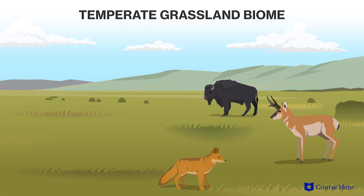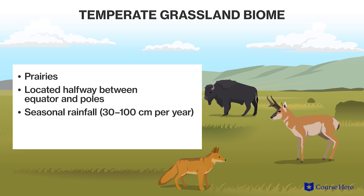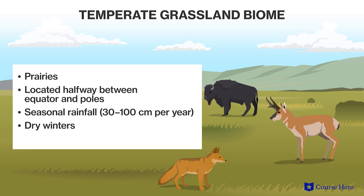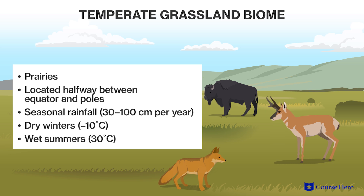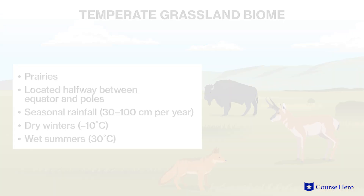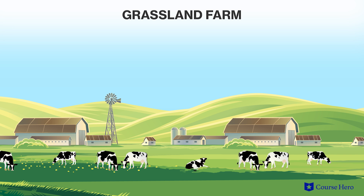Large grasslands known as prairies are generally located about halfway between the equator and the poles. Rainfall is seasonal, averaging 30 to 100 centimeters a year, with dry winters and wet summers. Similarly, winters are cold with average temperatures of negative 10 degrees Celsius, and summers are hot with 30 degrees Celsius being the average temperature. Very few trees grow in grasslands, but the grasses that grow in these regions build fertile soils, which can be converted into successful agricultural land.